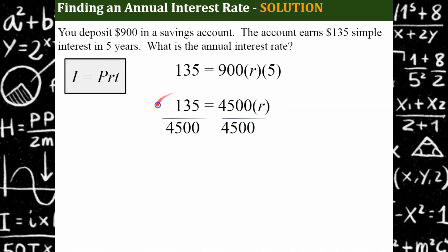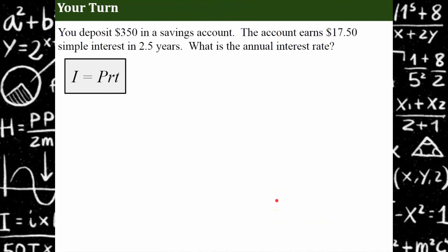Calculator time, 135 divided by 4,500 is 0.03. One more step we're solving for the rate. The rate needs to be answered as a percent. So we know that the bank was using an annual interest rate of 3%.